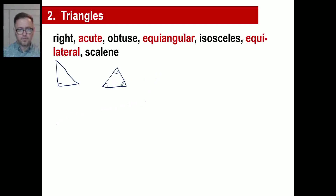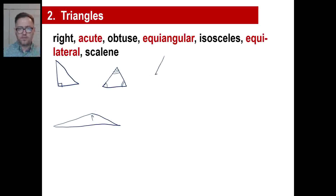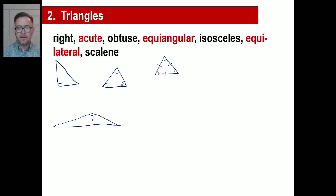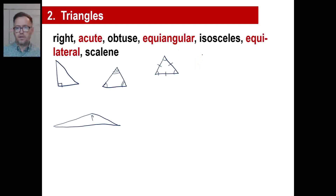An obtuse triangle has a top angle that is more than 90 degrees. An equiangular triangle has all three angles the same measure. Sometimes a picture of a triangle will have a little curve inside the angle — if one matches another, that means those two angles are the same measure. Tick marks on each side indicate those sides are the same length.